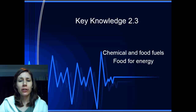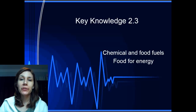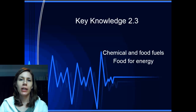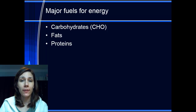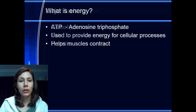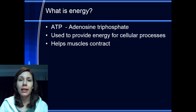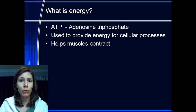Just a quick video on looking at chemical fuels for energy, and we'll have a look at different foods related to them as well. The three main fuels — you'll have already come across these before — are carbs, fats, and proteins. Energy is basically ATP, adenosine triphosphate: one adenosine molecule and